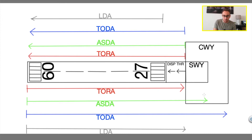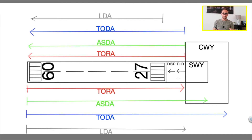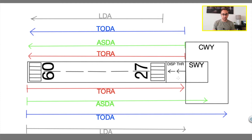Then we've got the displaced threshold, as you can see here. This is another part of the runway that is used to help increase the takeoff distance. If you are taking off, you can use the displaced threshold in order to start your takeoff, so you're going to have more runway available in front of you. I hope these three distinctions are clear. If you have any questions, just drop me a comment below regarding the displaced threshold, stopway and clearway.